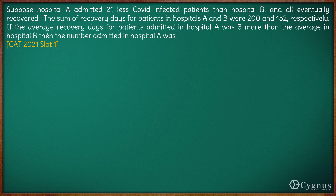In this question, we are given that hospital A has admitted 21 fewer COVID-infected patients than hospital B. So we are talking about two hospitals A and B. The number of patients in A is 21 less than that in B. Let us say the number of patients in B is x, so the number of patients in A is x minus 21.